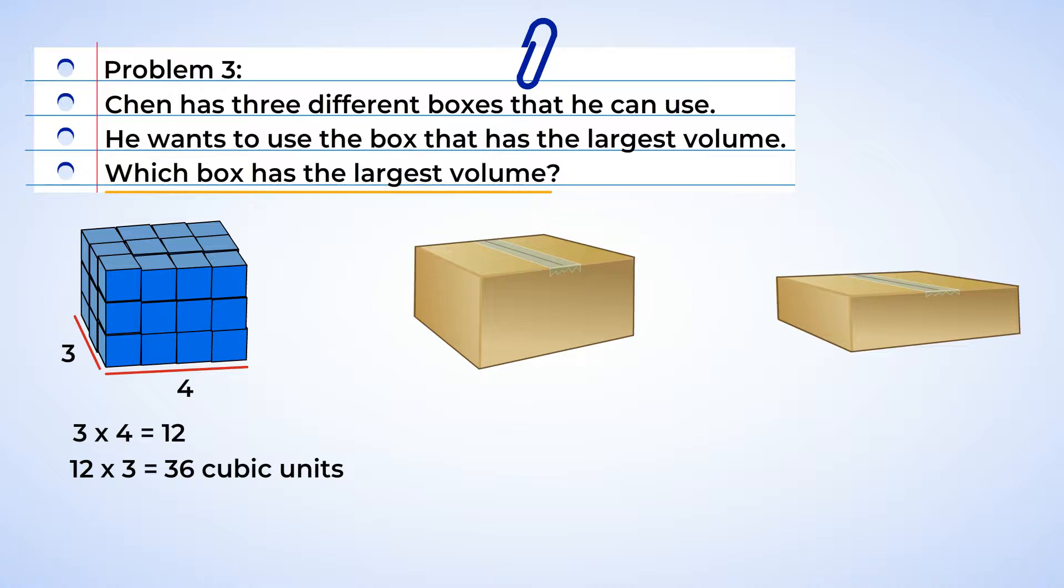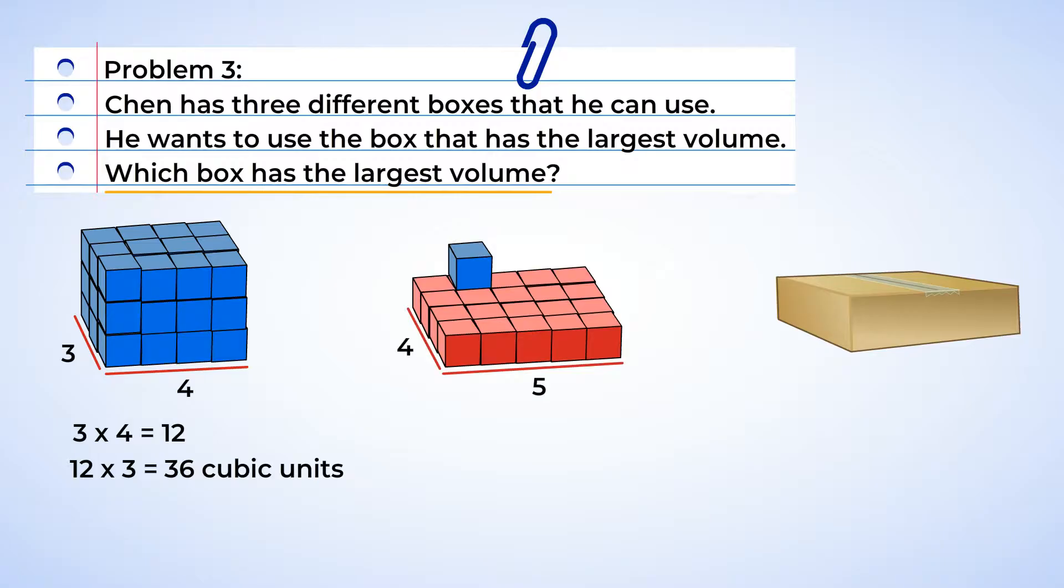All right, on to the next box. This box has a base layer that is 5 units by 4 units. And this means that there are 20 cubic units in the first layer. Well, since there are two layers, we can multiply 20 by 2, and we get 40. Wow, this second box has 40 cubic units. That's even bigger than the first.